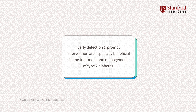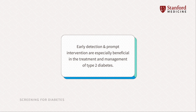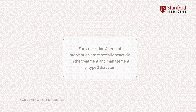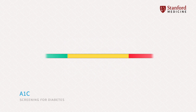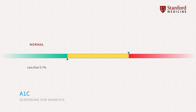Early detection and prompt intervention are especially beneficial in the treatment and reduction in the risk of future health complications which patients with diabetes are more susceptible to. An A1c test to measure average blood glucose is one of the screening tools in the diagnosis of a patient at risk for type 2 diabetes. An A1c below 5.7% is within normal range; between 5.7% and 6.4% is considered pre-diabetes; and 6.5% or higher screens positive for diabetes.